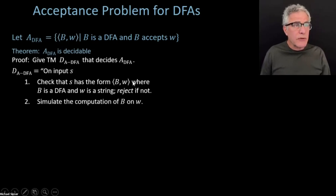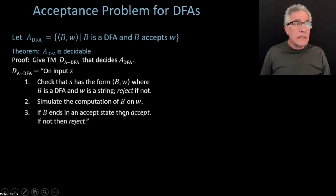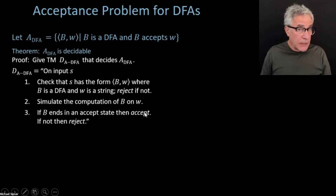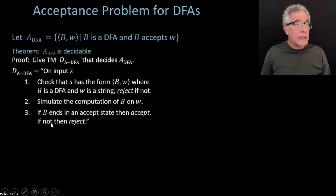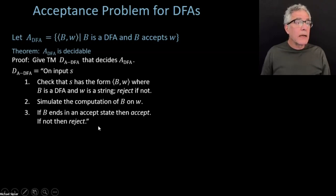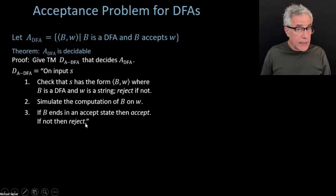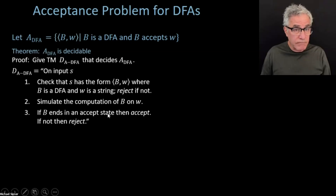After checking the input form, simulate the computation of B on W. If B ends up in an accept state, then we know B is accepting the input, and we accept. If B does not end up in an accept state at the end of W, then we reject, because B is not accepting W. That's the description of this machine.